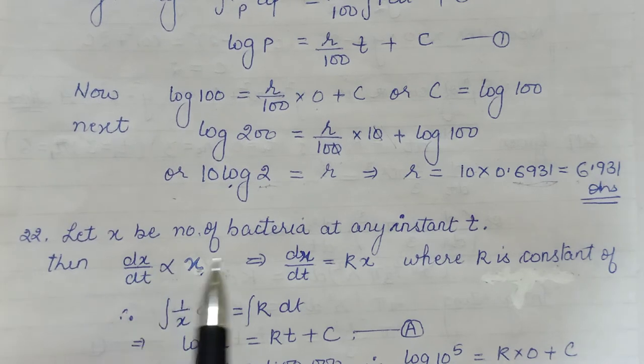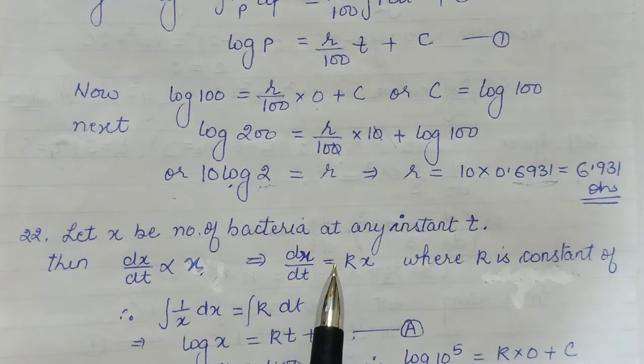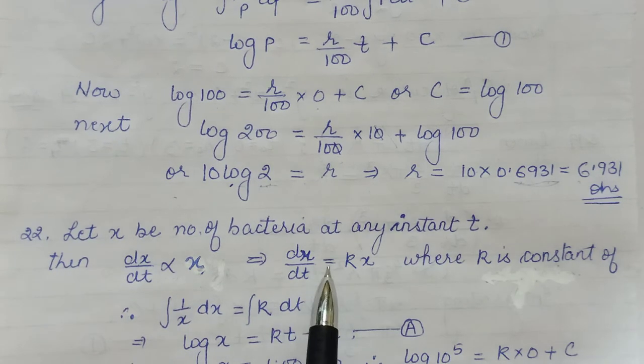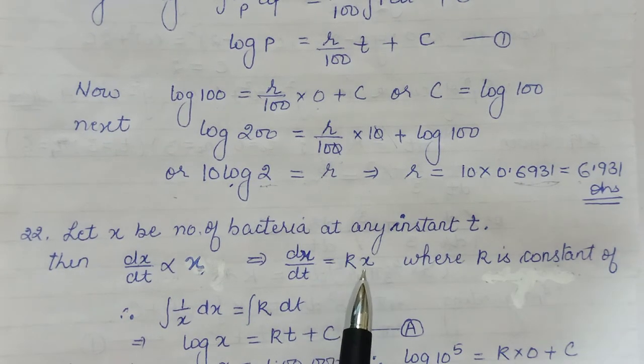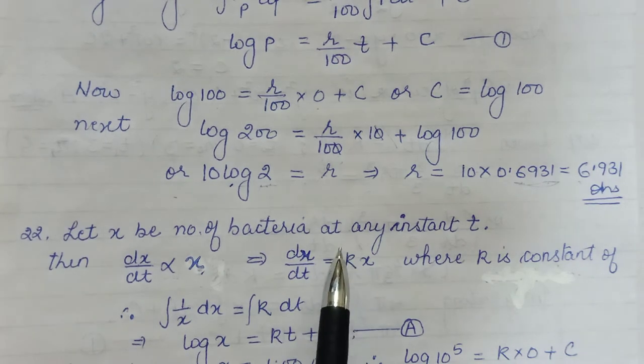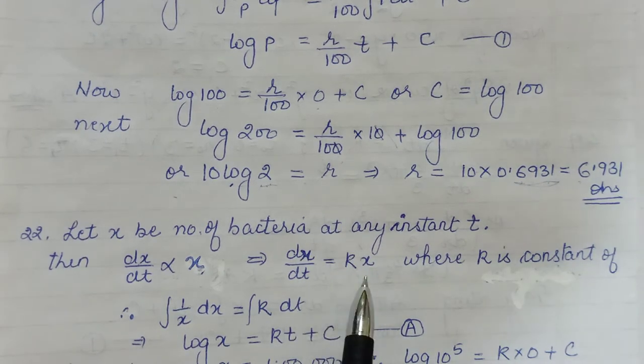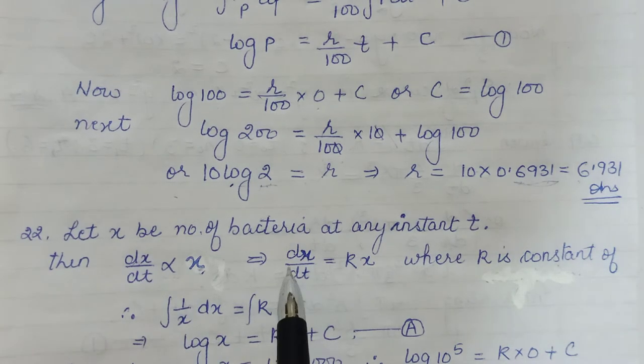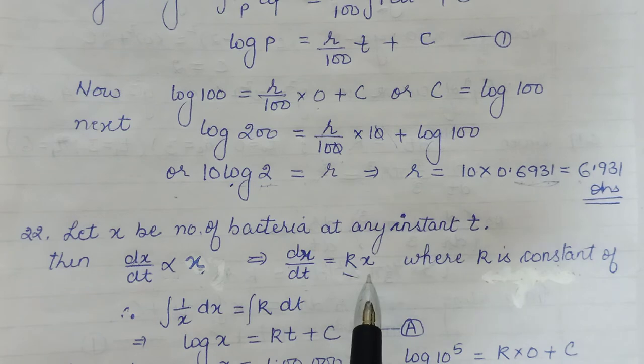When you have proportionality, when you put constant of integration, then when you remove the proportionality and you put equality, then you have a constant of proportionality we call it. So that is why this will end up giving you dx/dt is equal to some k times x.